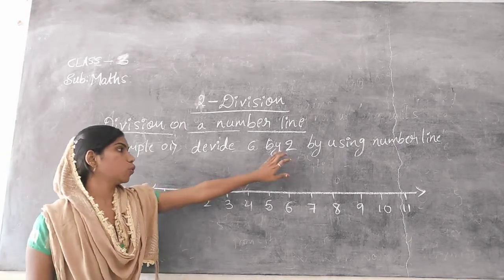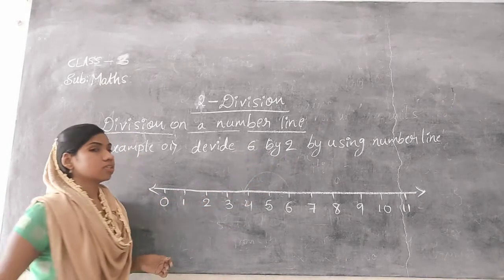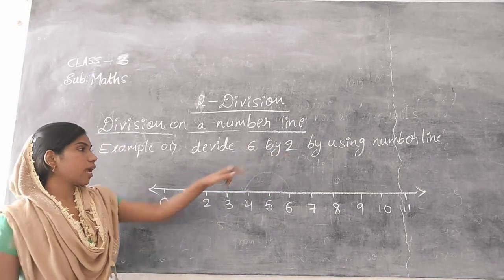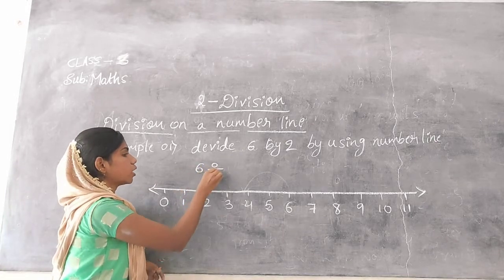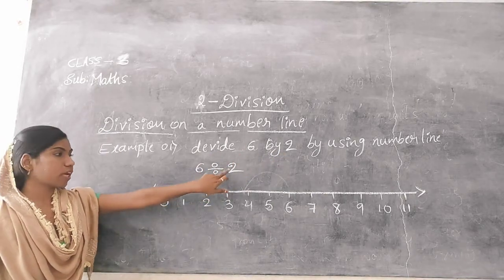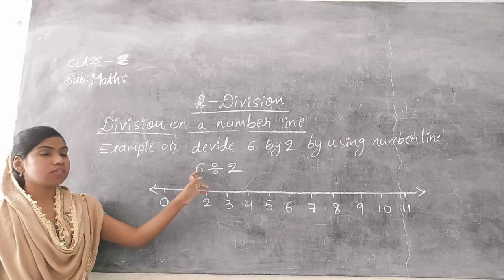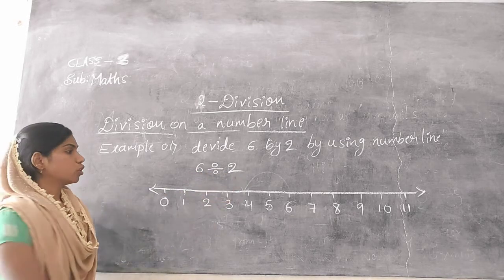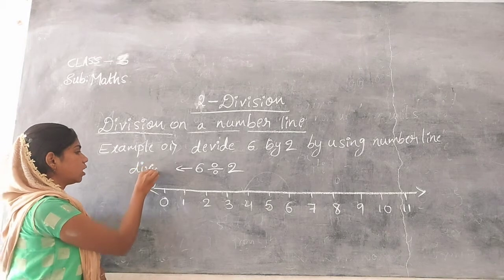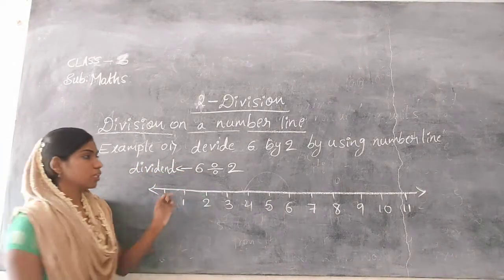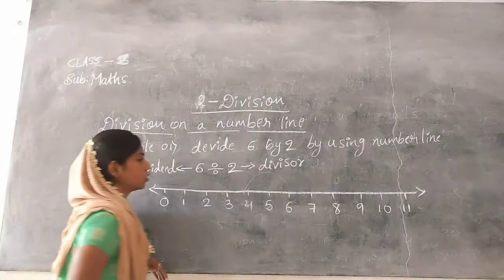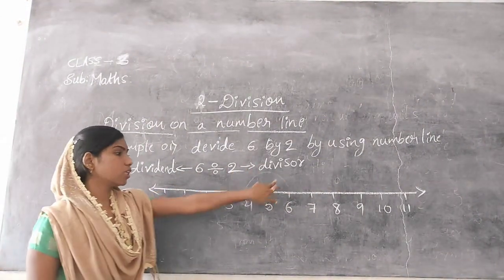Divide 6 by 2. We can write it as 6 divided by 2. Here, 6 is a dividend and 2 is a divisor.